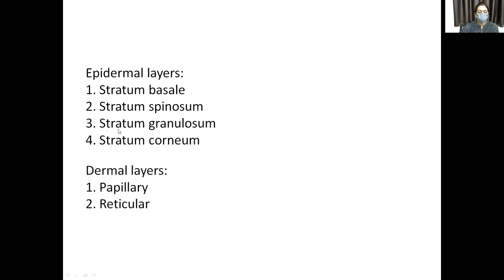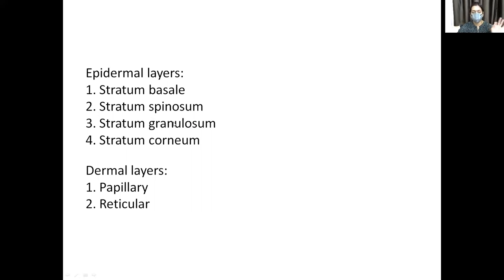The stratum granulosum is a thin layer containing keratohyalin granules, which function to prevent water and fluid loss from the body. Then the stratum corneum — the tensile strength of the skin, resistance to heat, friction, and mechanical stress — is handled by the stratum corneum, which is made up of keratin. These are the four epidermal layers.